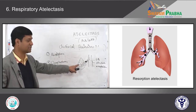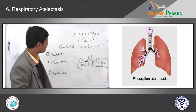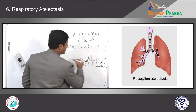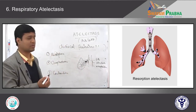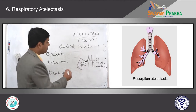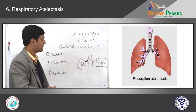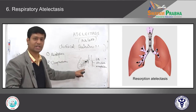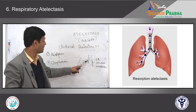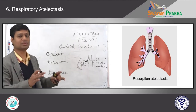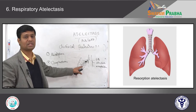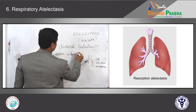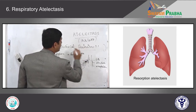If you remove the foreign body, stricture, or tumor — if the air entry becomes patent again — the atelectatic lung gradually expands because there is no permanent pathology. The air which was absorbed led to collapse, but upon removal of the obstruction, the lung re-expands. Therefore, resorption atelectasis is a reversible condition.